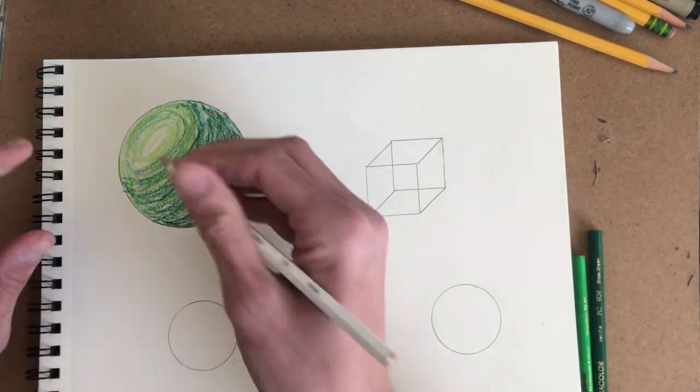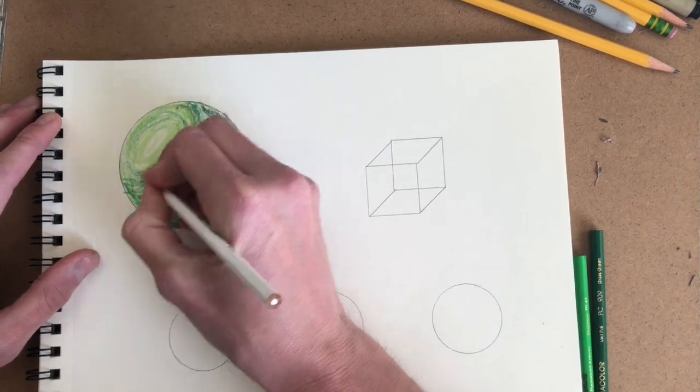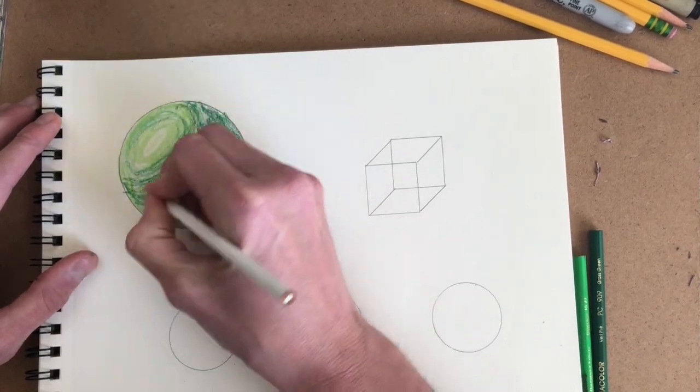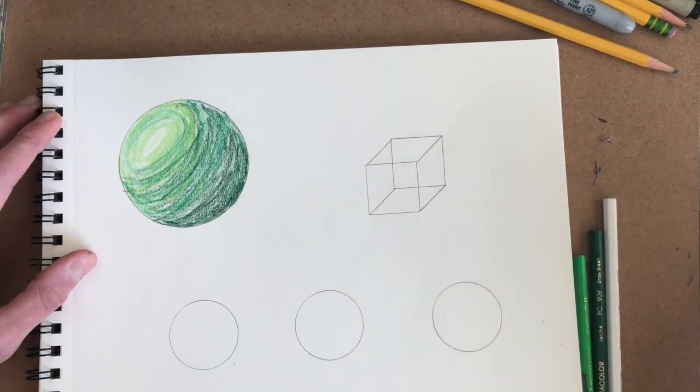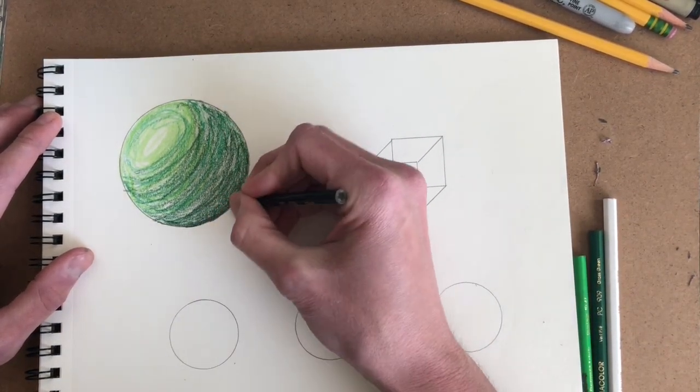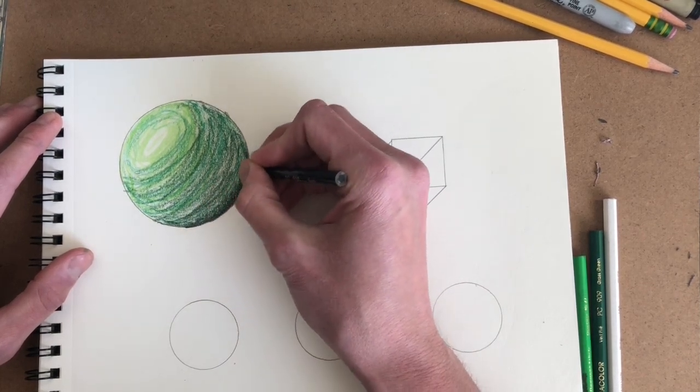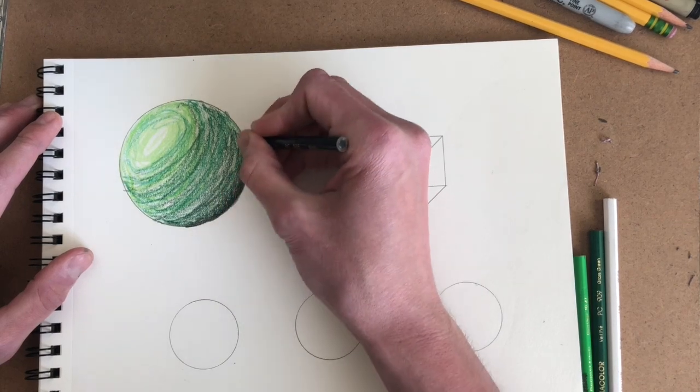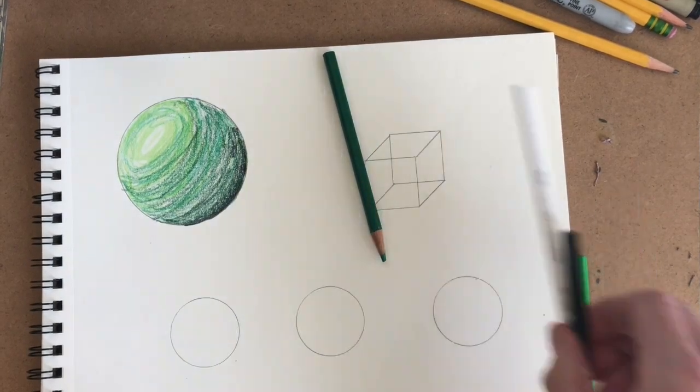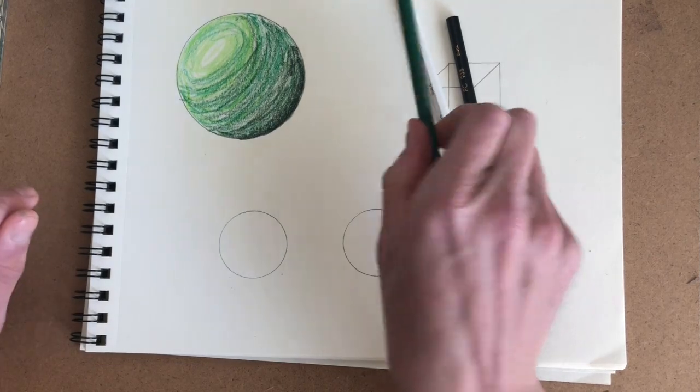And then to create the lighter areas, to make the lighter areas even lighter, I'm going to go over it with a little bit of white. It's barely noticeable but it does add just a little bit of lightness to the light area. And then with my black, I'll go in and shade just the darkest, darkest part of my sphere.